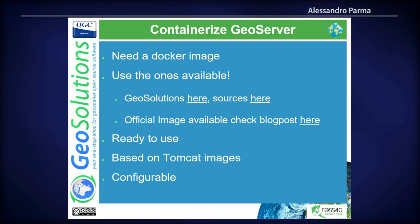If you want to try out containers and Kubernetes, you need images — they are available online. GeoSolutions has its own image; the sources are available online with a link in the slides. There's also an official image that just came out — you can find the blog post on the official GeoServer blog. The images are ready to use, based on Tomcat, and quite flexible and configurable, so you don't have to implement everything yourself.